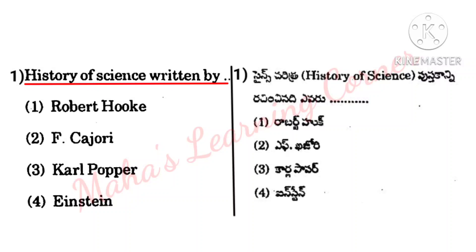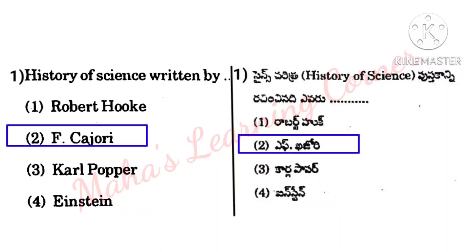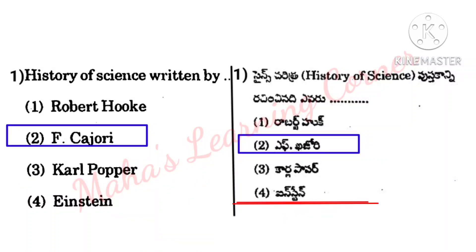Question: 'History of Science' was written by whom? Options: Robert Hooke, F. Kozori, Karl Popper, Einstein. Correct answer: Option 2, F. Kozori. Robert Hooke discovered the cell for the first time — cells were first observed by Robert Hooke in 1665. Karl Popper: this is a history of corrected mistakes.